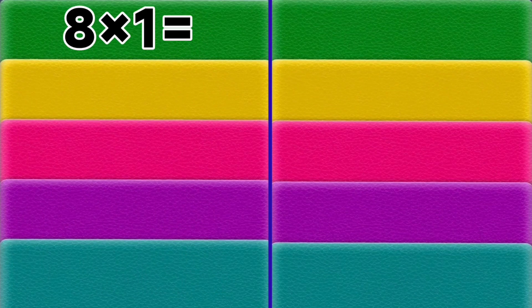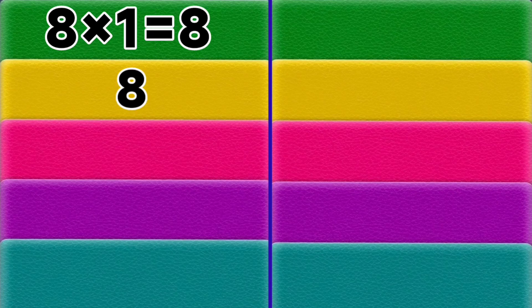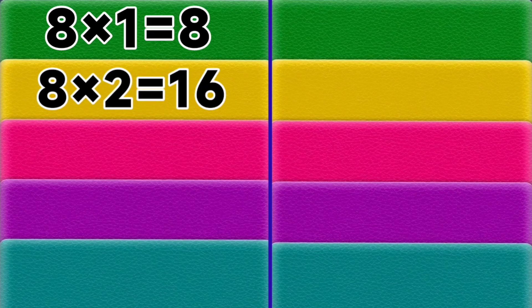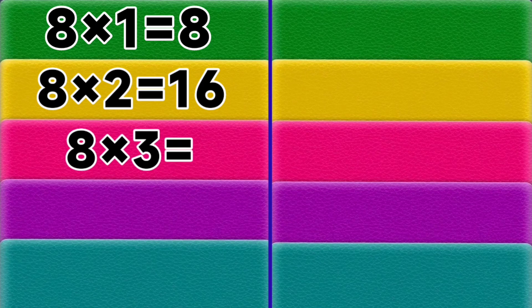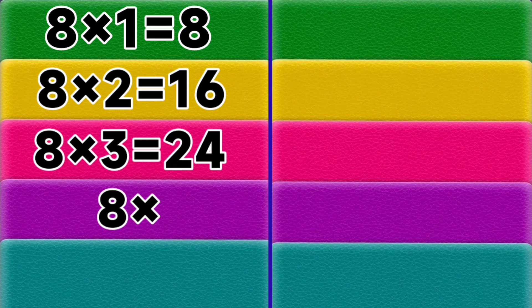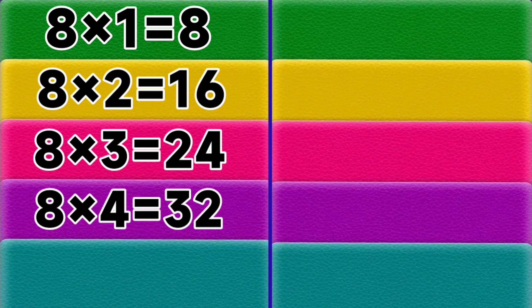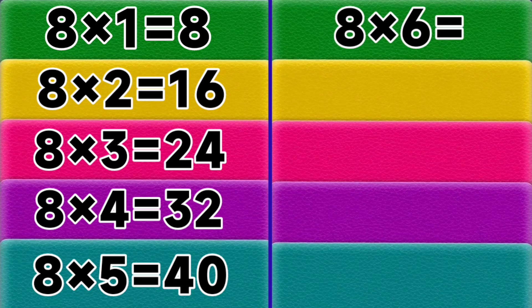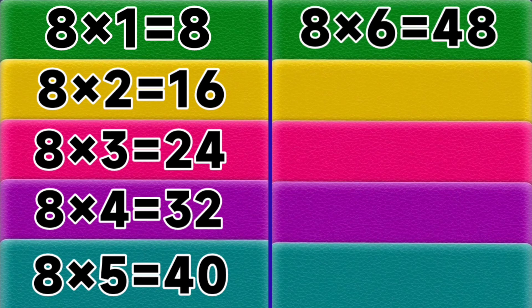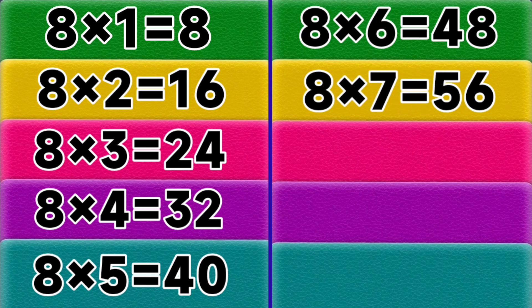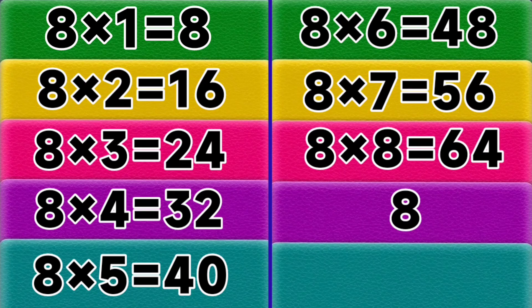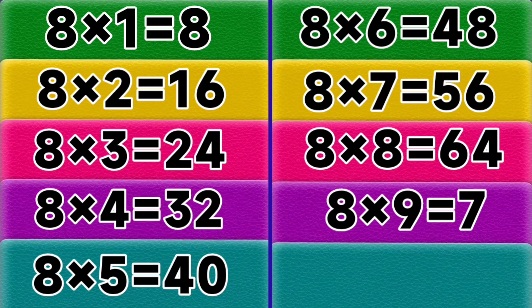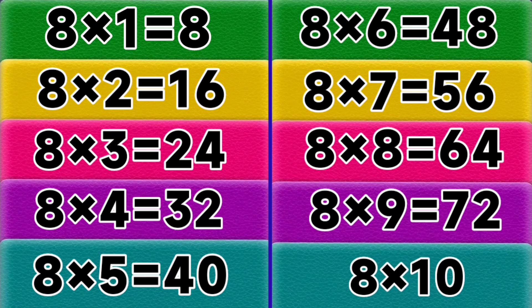8 ones are 8, 8 twos are 16, 8 threes are 24, 8 fours are 32, 8 fives are 40, 8 sixes are 48, 8 sevens are 56, 8 eights are 64, 8 nines are 72, 8 tens are 80. Table of 9.